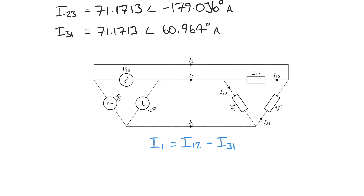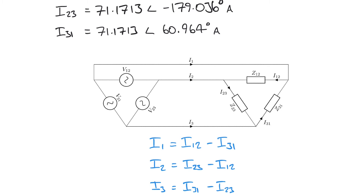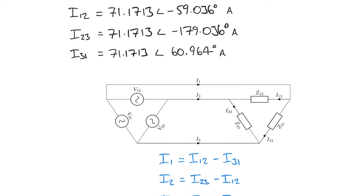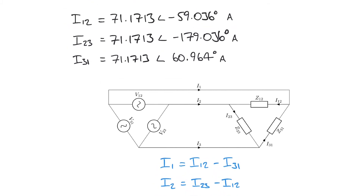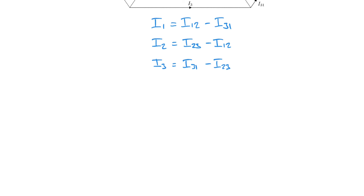Following the same logic from the diagram, I2 = I2,3 − I1,2, and I3 = I3,1 − I2,3. We're performing subtractions of phase currents to work out the line currents. When performing subtractions, it's best to work in rectangular form rather than polar form. Using the REC function on a scientific calculator, we can convert our three phase currents into rectangular form.